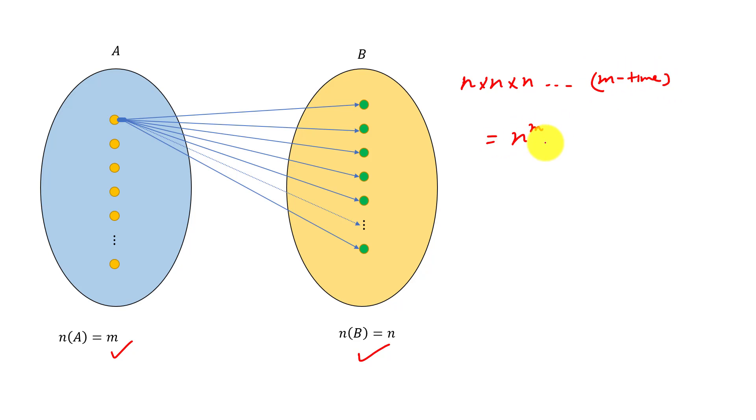For example, suppose set A has elements a, b, c, and d, and set B has elements 1, 2, and 3. The number of elements in set A is equal to 4, and the number of elements in set B is equal to 3.